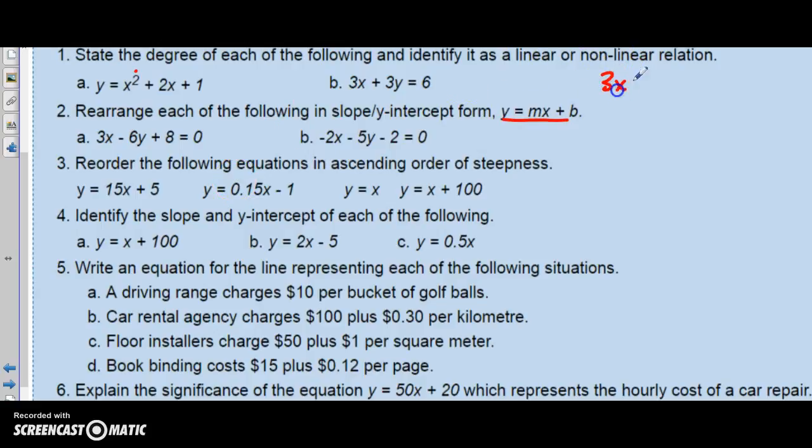So if we start off with 3x minus 6y plus 8 equals 0, what we want is y by itself. Now, I would do this personally. If I have a negative, you're going to move the y's on one side and everything else, the x's and the constants on the other side. But what I would do is determine which way to put the y's based on where will y be positive. I just don't want to deal with this negative. So there's a negative 6y here. If I move it across the equal sign, it will add when I bring it on this side. So this is 3x plus 8 equals 6y.